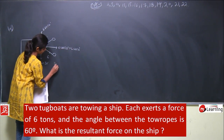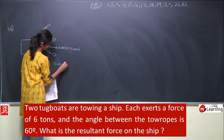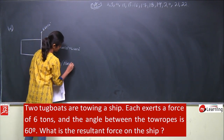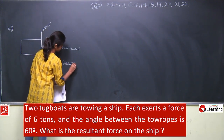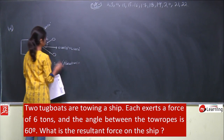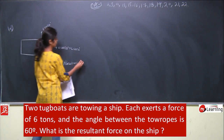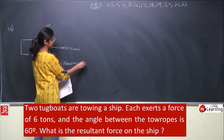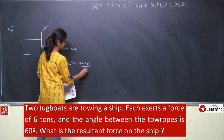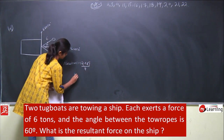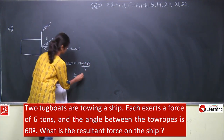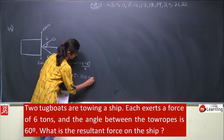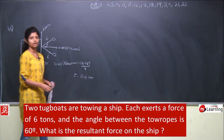The total resultant force will be 2 × 6 cos 30° = 12 × (√3/2), which comes out to be approximately 10.4 tons.